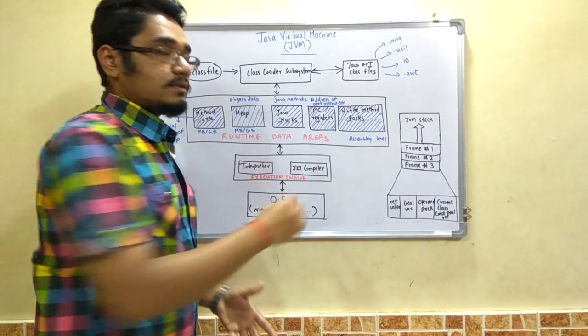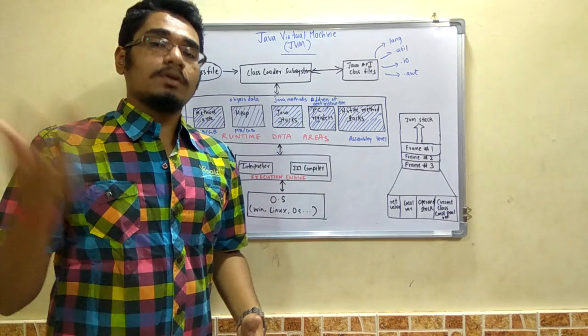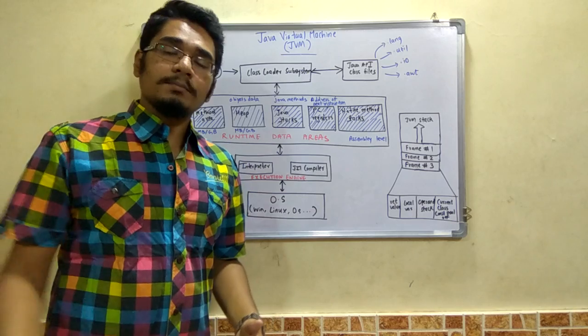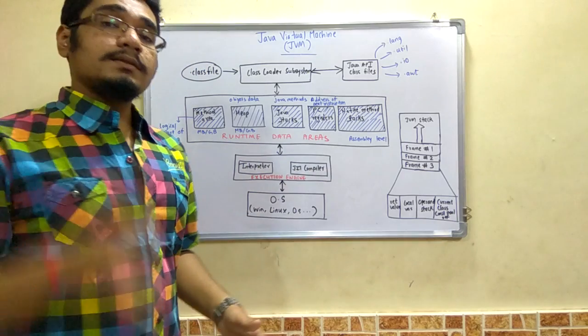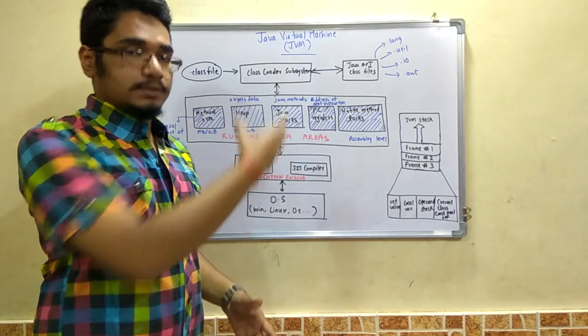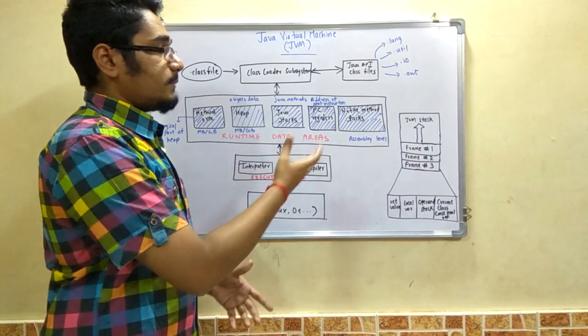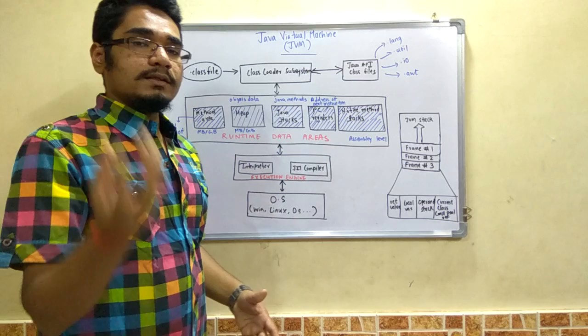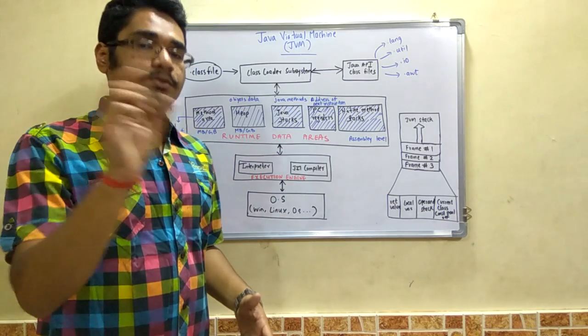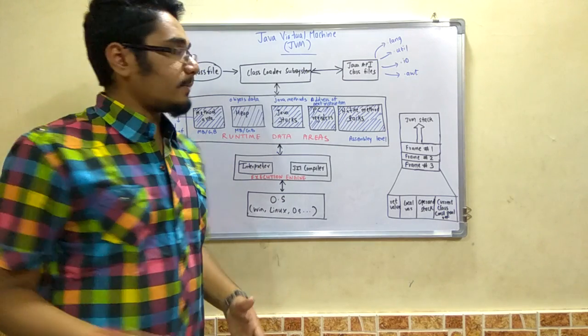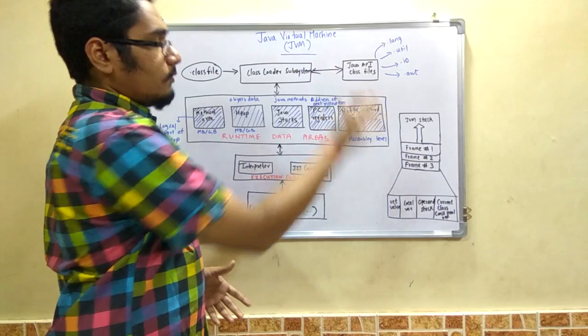Now these registers you can see in the architecture of 8051 as well as some other microprocessors, so the same concept is followed in JVM also. The program execution or the program flow is basically maintained by the PC registers and this address of the next instruction is stored in the hexadecimal format.